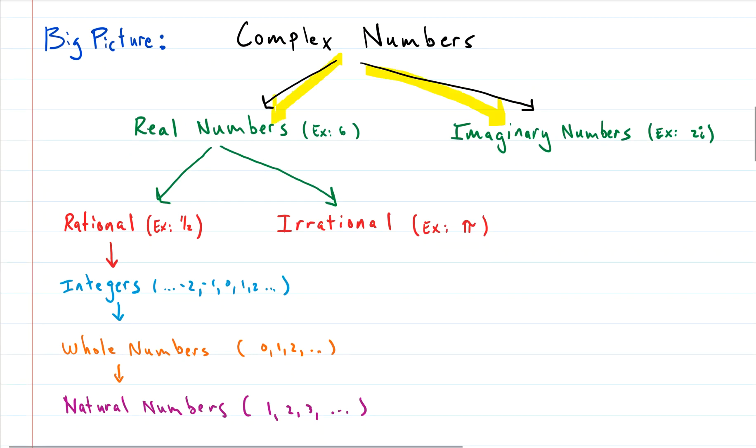So complex numbers are broken down into two groups: we have the real numbers and the imaginary numbers. The imaginary ones are the numbers that have the i associated with them, and the real numbers do not have an i associated with them, like six. The real numbers are broken down further into two more categories.